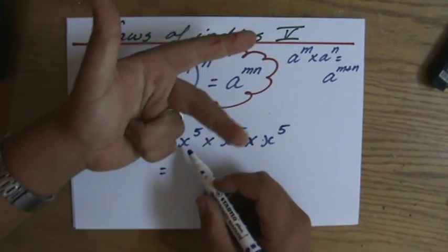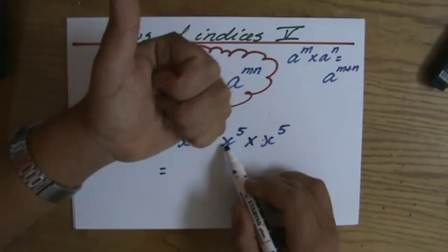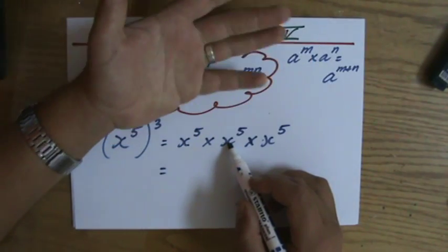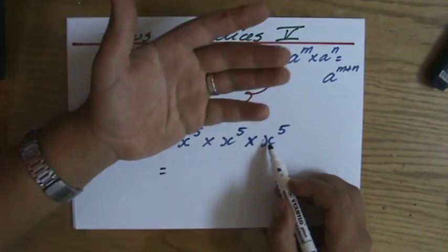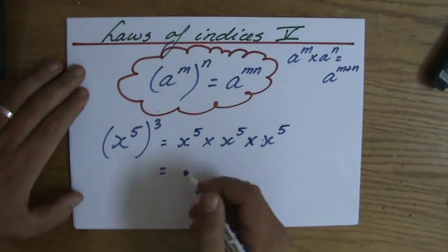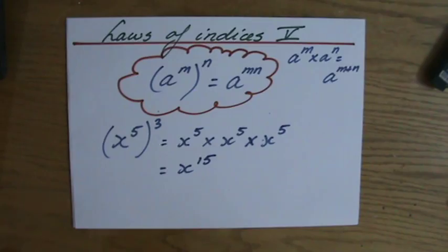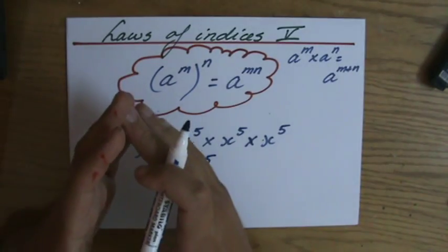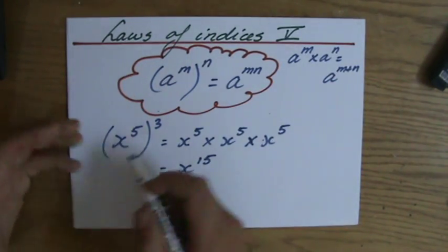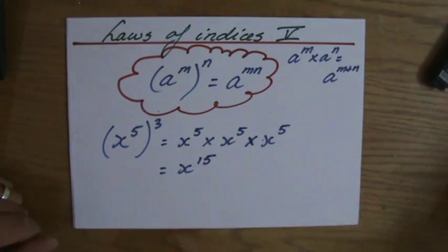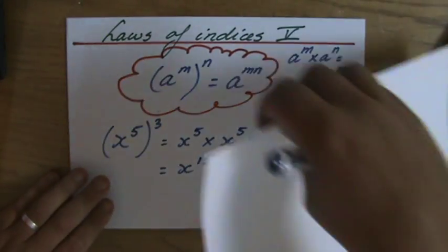x times x times x... repeated 15 times gives x to the power 15. So I'm not going to write it out every time, because I understand that when talking about brackets I'm multiplying those indices.